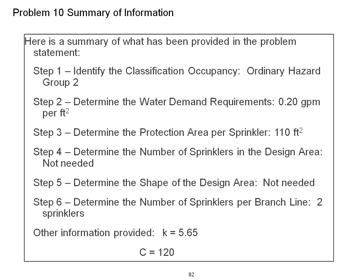The following is a summary of information for problem 10. Step 1, identify the classification occupancy: Ordinary hazard group 2. Step 2, determine the water demand requirements: 0.2 gallons per minute per square foot. Step 3, determine the protection area per sprinkler: 110 square feet.